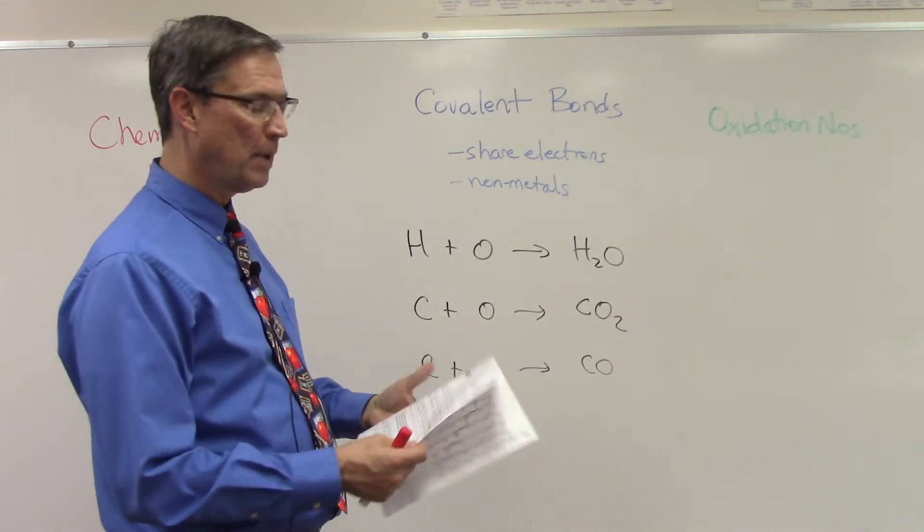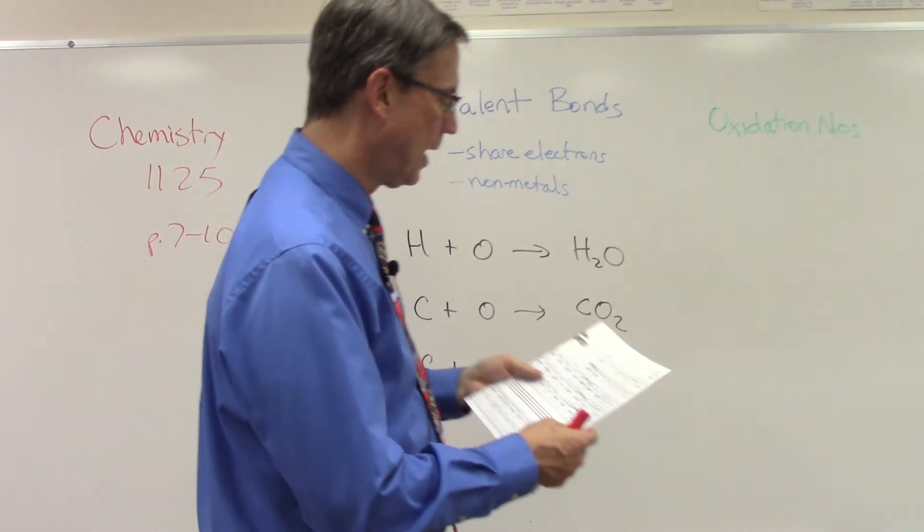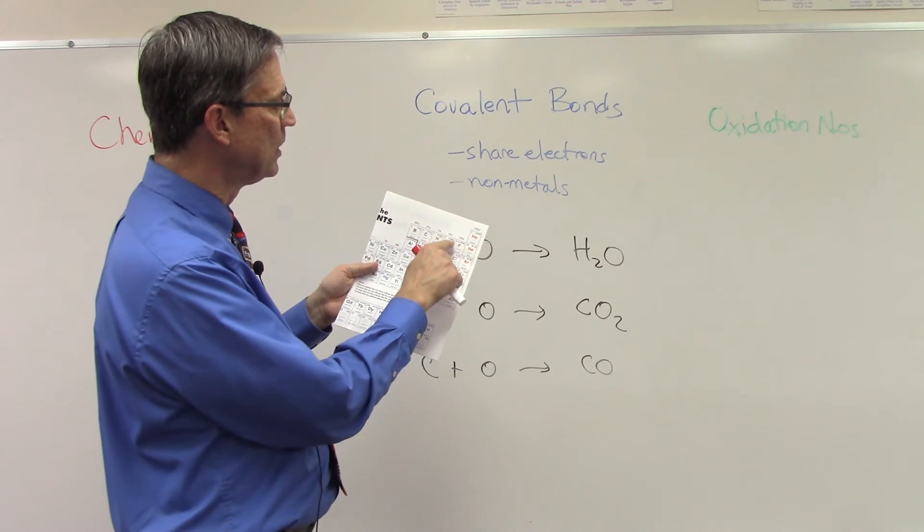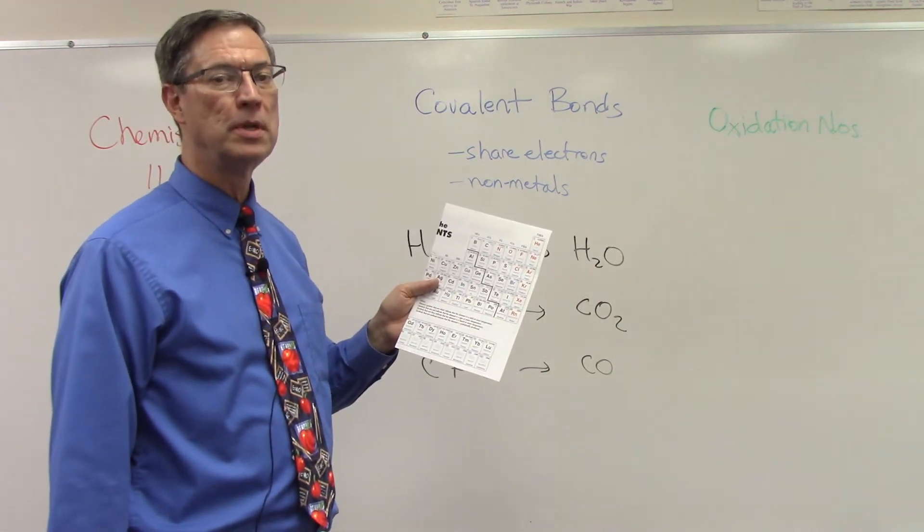So let's talk about how these come together. Remember in a previous video, I pointed out these little numbers in the upper right-hand corner. Those are called the oxidation numbers.